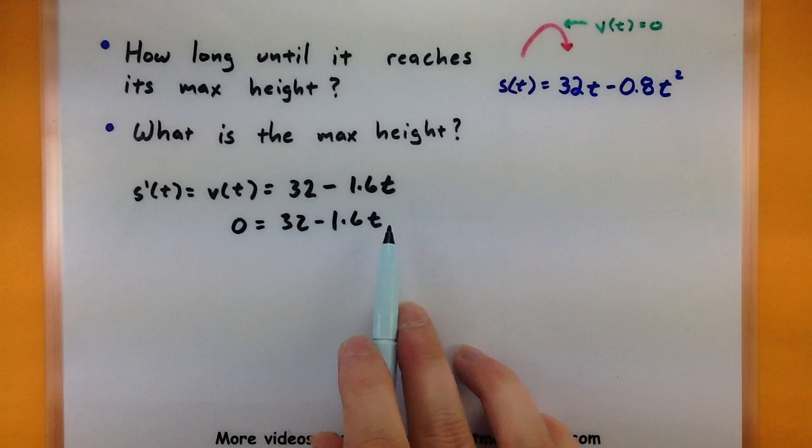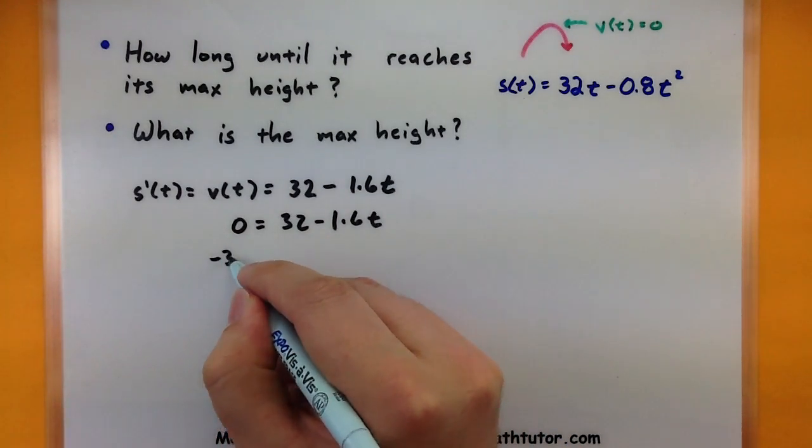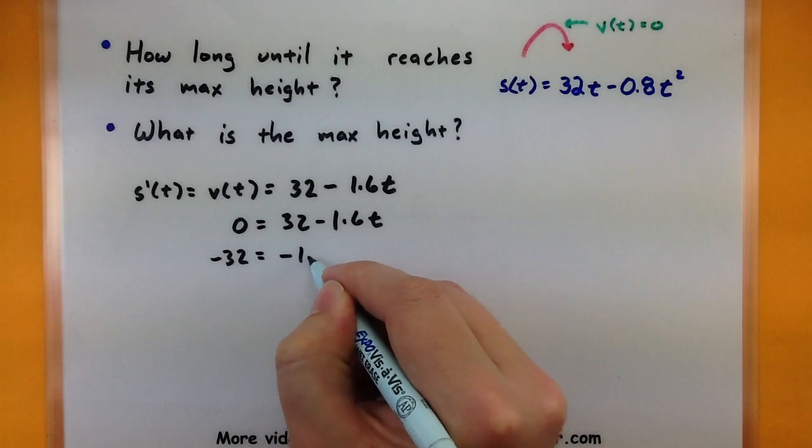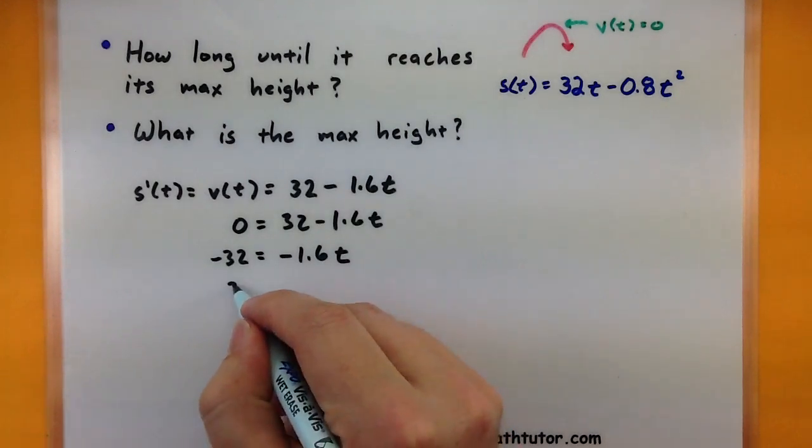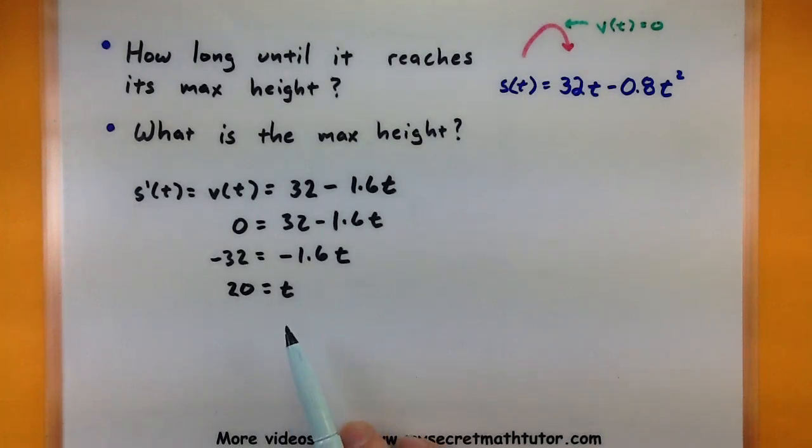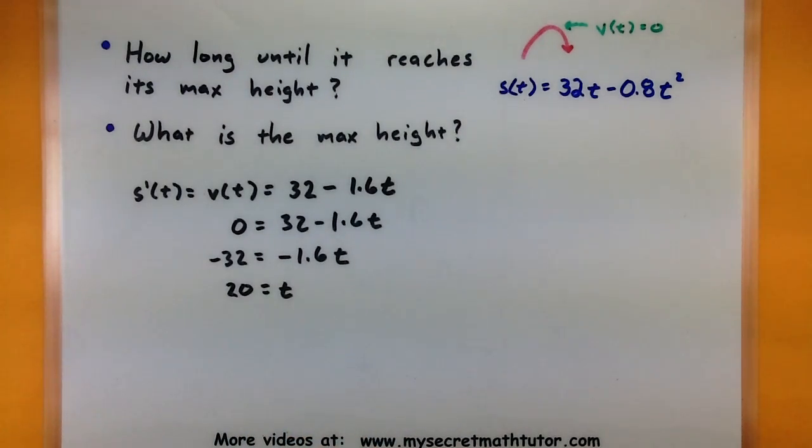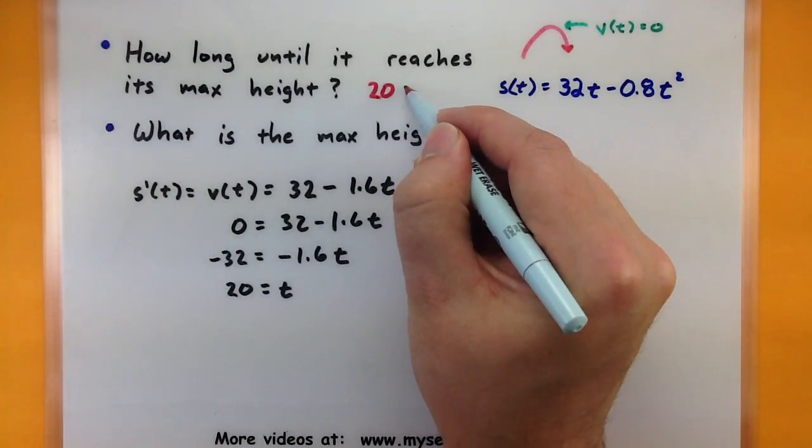To solve for t, I'd first want to get my 32 to the other side. So negative 32 equals negative 1.6t. Dividing both sides by negative 1.6, I'd get 20 equals t. So careful, this is not the maximum height, but it does tell me how long it takes before it does reach the maximum height, and it looks like it will happen after 20 seconds. So how long until it reaches its maximum height, let's go ahead and answer that one: 20 seconds.